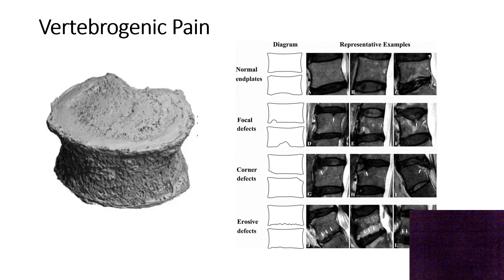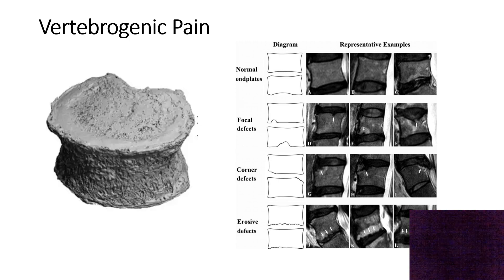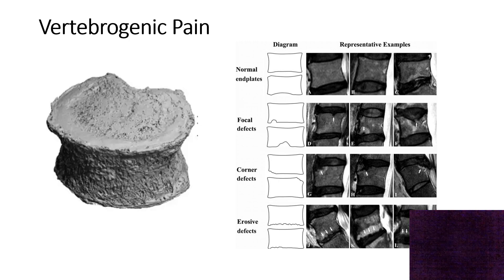For vertebrogenic pain, you have your vertebral bodies — the hard ring around the marshmallow shape, and the soft end plates. You can have defects in the end plates due to trauma, heavy exercise, or falls. These defects cause inflammatory reactions visible on MRI. In about 80 to 90% of people who have these MRI findings and have anterior column axial back pain, it's the vertebrogenic pain causing their symptoms.